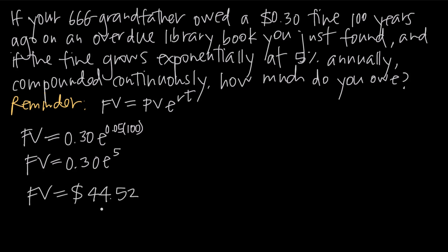So this is the amount that we would owe today if we started with a $0.30 fine 100 years ago, and that amount of $0.30 grew at an annual interest rate of 5% compounded continuously. 100 years later, today, we would owe $44.52.